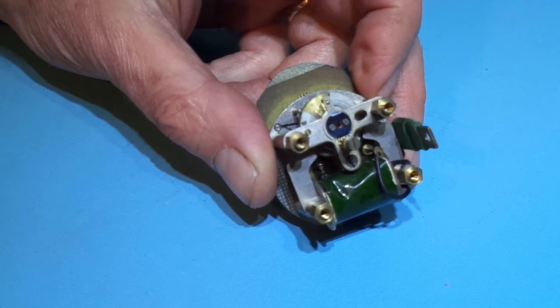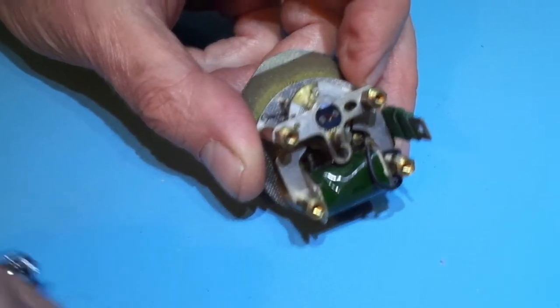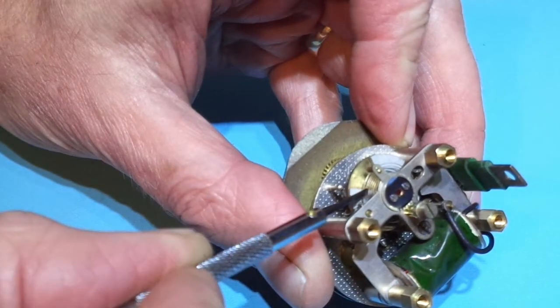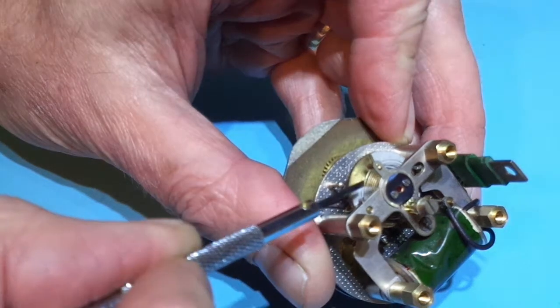We're just going to take you through now the various items that you can check in order to make sure the clock is suitable for repair. The first item we're going to have a look at is the hairspring, which is being pointed out now. It's very unusual for the hairspring to be damaged, but it's just good to check it's not broken.